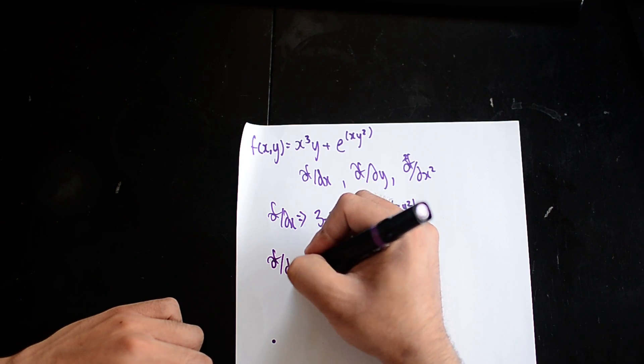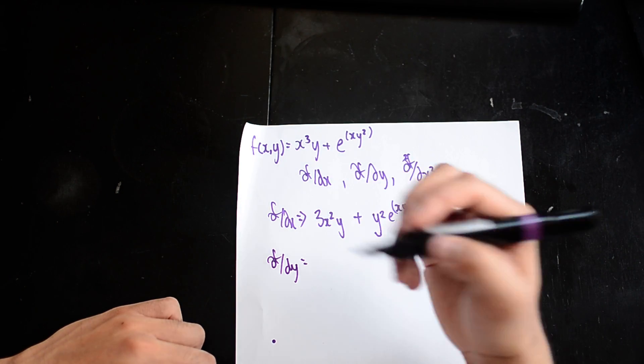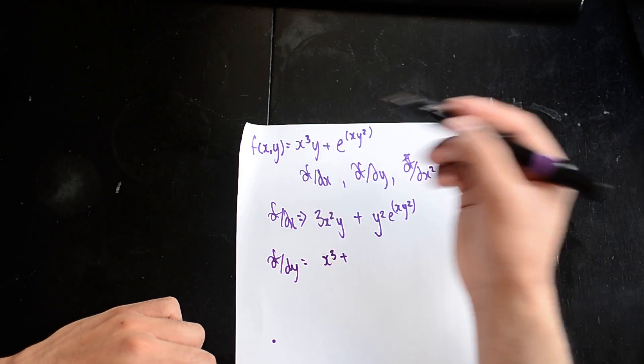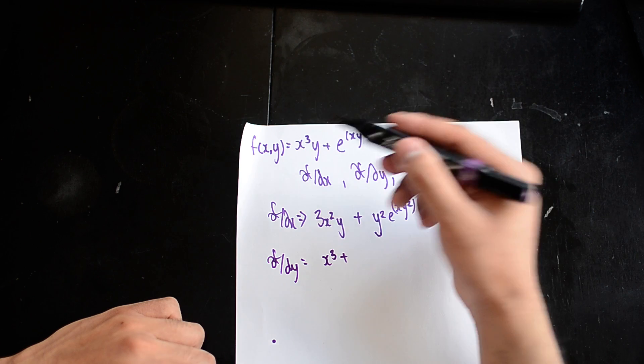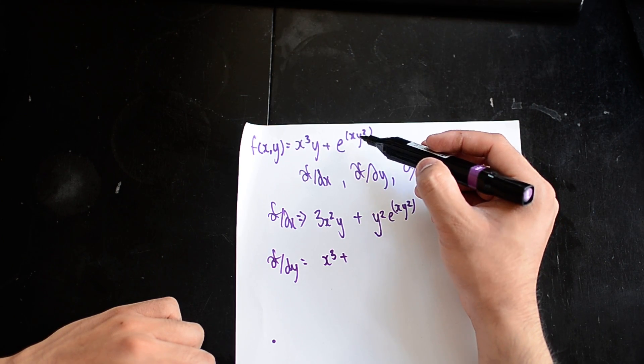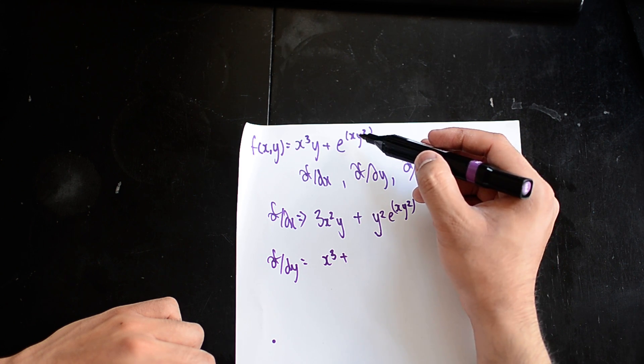I'm now going to be holding the x terms as constant, so the y differentiated here becomes 1, so you just have x³. And here you can see that if I now hold the x term as constant, it becomes 2xy differentiated.